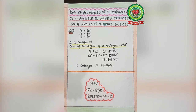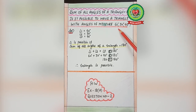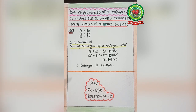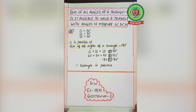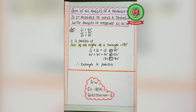Now we will do a related sum: whether a triangle is possible or not. Let's read the question — 'Is it possible to have a triangle with angles of measure 60°, 30°, and 90°?' This is a question related to the classification of triangles on the basis of its angles, and we have to determine whether these three angles form a triangle.